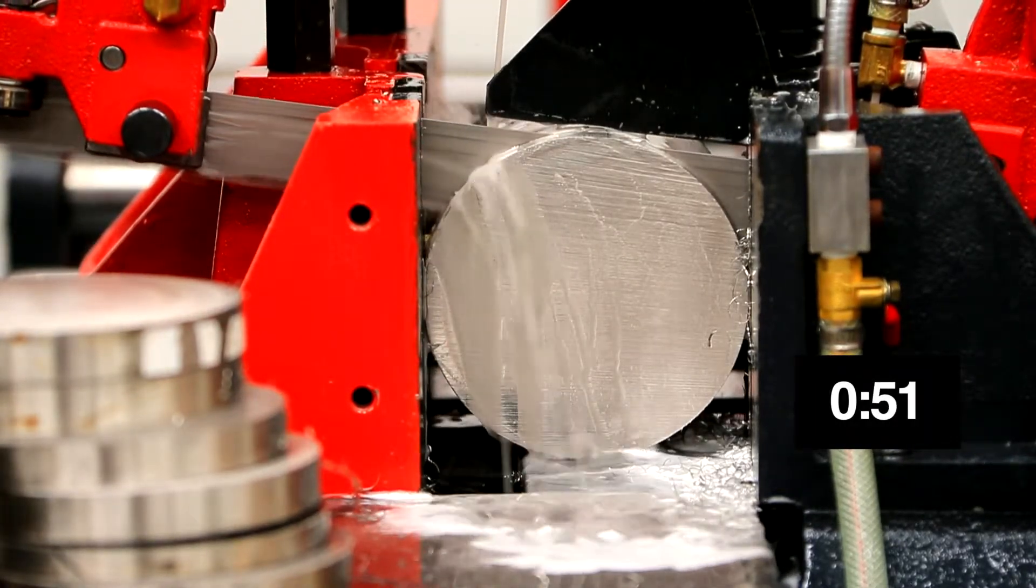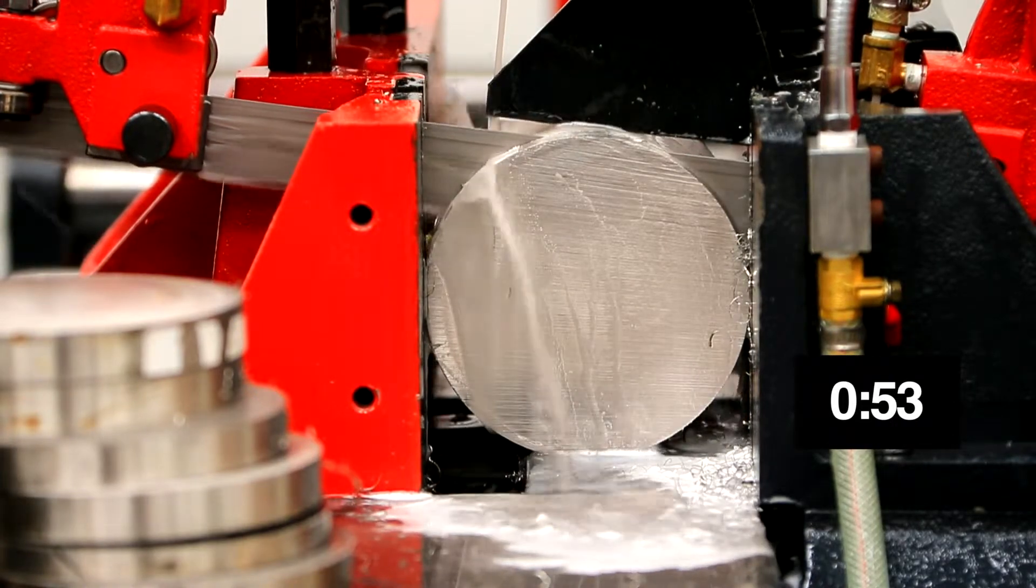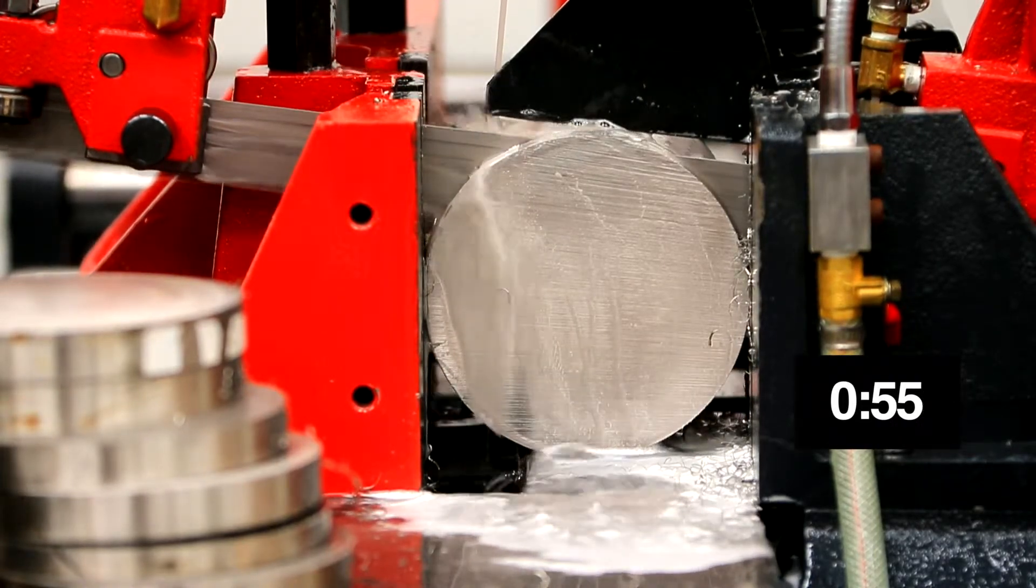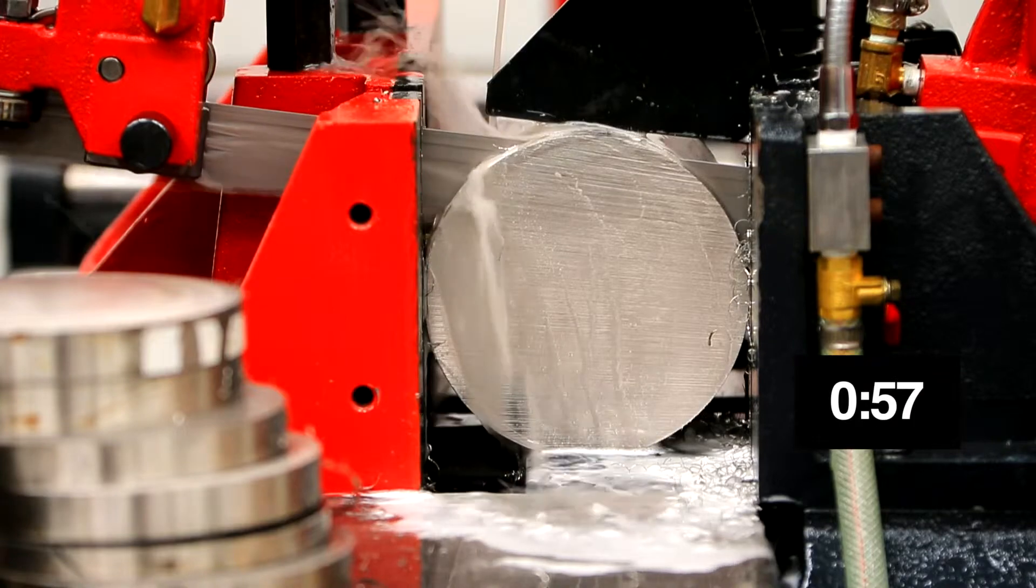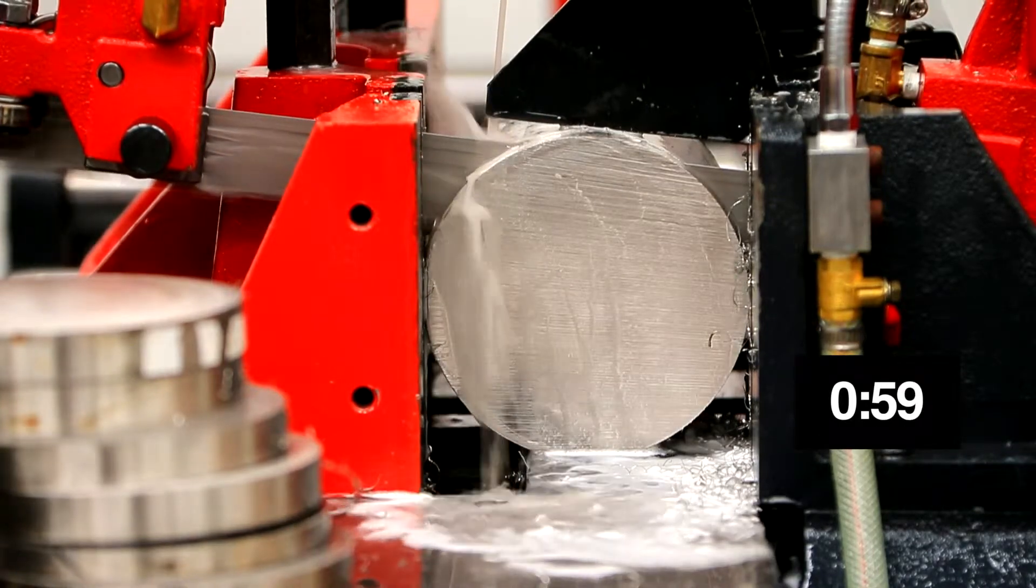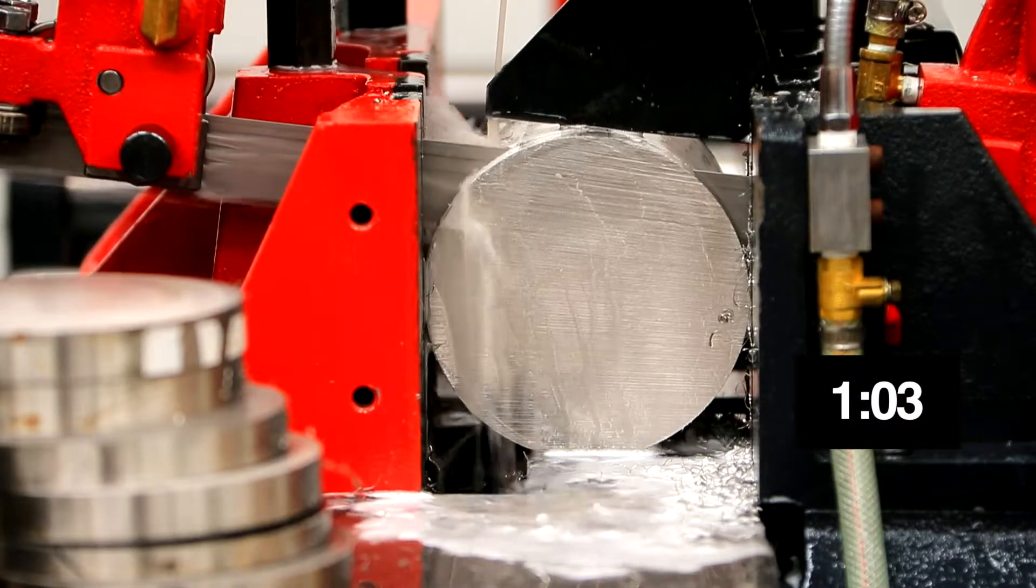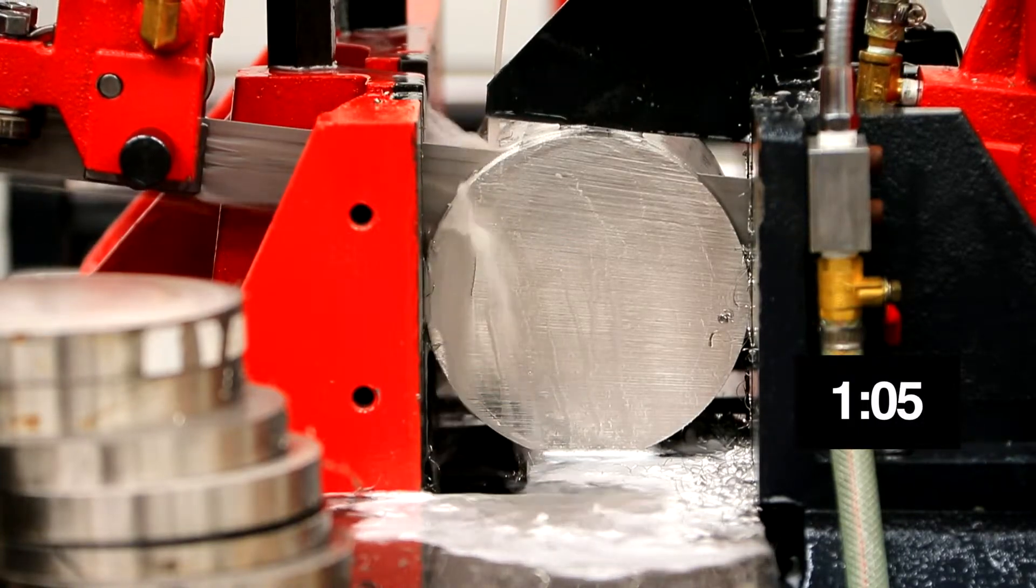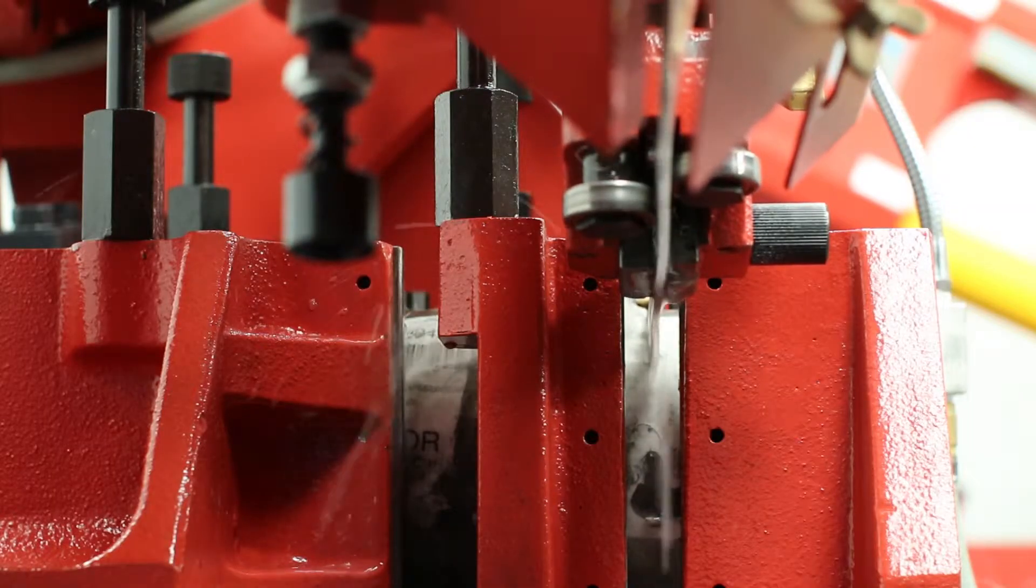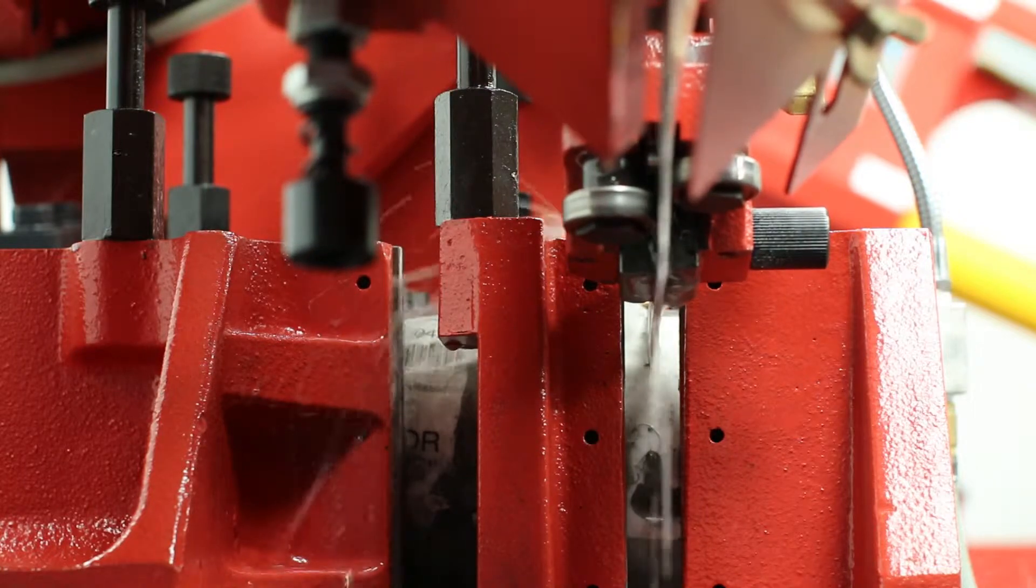Today, we'll be cutting 304 stainless steel utilizing the Velox 250 NC bandsaw. This particular machine is well suited to run 2.5 to 3.5 rugged tooth triple-chip carbide bandsaw blade. The split vices on this machine will hold the piece securely on both sides of the cut.